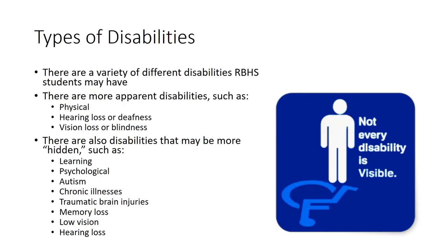Now that we have talked about the definition of a disability, we are going to discuss the different types of disabilities your students may have. Some disabilities are more apparent than others, such as a physical disability, hearing loss or deafness, and vision loss or blindness. Physical disabilities are usually not considered hidden disabilities. Someone can be born with a physical disability or acquire one later on in life. A physical disability affects or limits a major life activity that is physical, such as walking. Some physical disabilities are due to muscular or bone impairments, diseases, or degeneration — including impairments such as those resulting from amputation, osteogenesis imperfecta, muscular dystrophy, and arthritis.